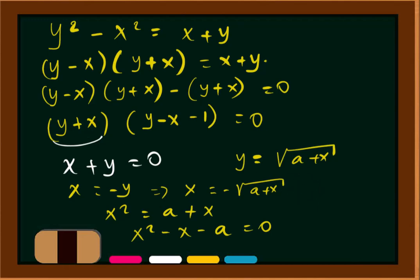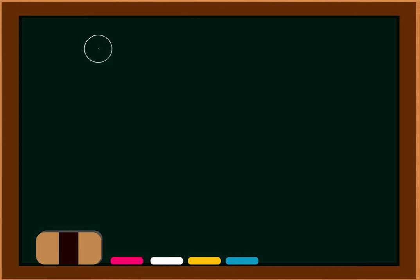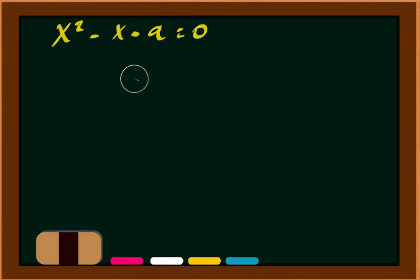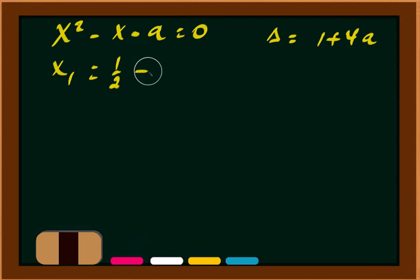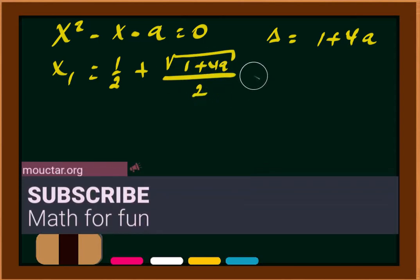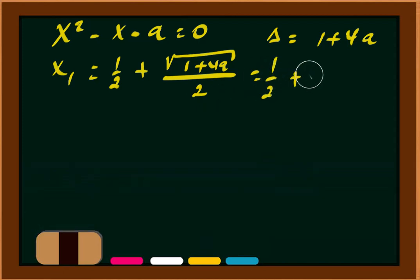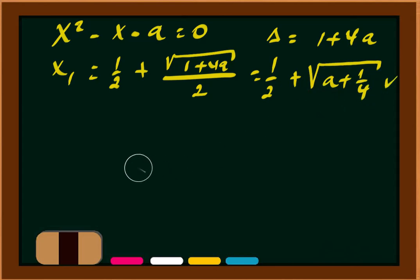Let's solve x squared minus x minus a equals 0. The discriminant delta equals 1 plus 4a, so square root of delta equals square root of (1 plus 4a). The first root x1 equals one half plus square root of delta over 2, which is one half plus square root of (a plus one quarter).